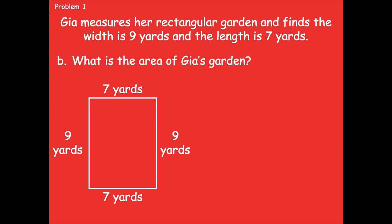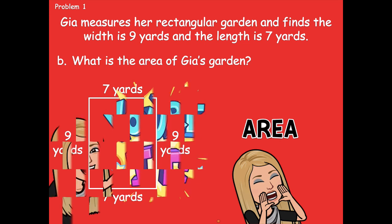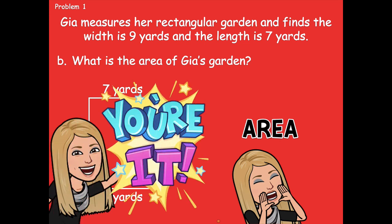Now let's look at part B on your problem set. It says what is the area of Gia's garden? Is question B asking us to find the area or the perimeter? It's asking us to find the area. Remember how we find the area — are we going to add the side lengths, or are we going to multiply the length and the width? Pause the video, write out an equation and solve for the area of Gia's garden, and then click play when you're ready to go over it together.